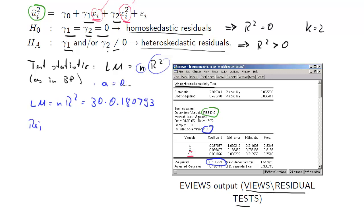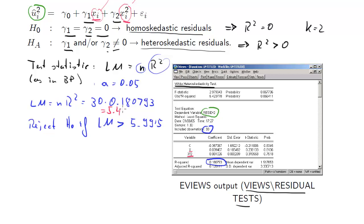The decision rule: let's use 5% again. We reject H-naught if the LM test is larger than 5.9915, which was the critical value for 2 degrees of freedom and alpha 0.05. When we calculate the value of the test statistic, we get 5.424. Therefore, our decision is that we do not reject H-naught, as the LM test is smaller than the critical value.